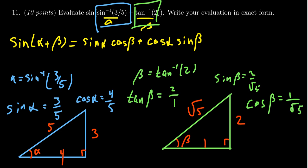Using these values we can plug it into the formula above. So sine of alpha, remember, was three-fifths. Cosine of beta was one over the square root of five. Cosine of alpha was four-fifths. And then sine of beta was two over the square root of five.